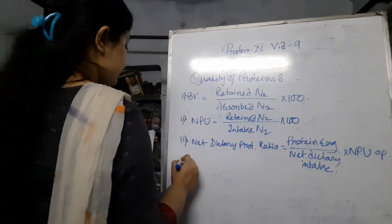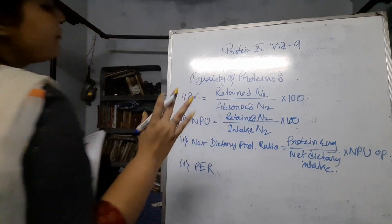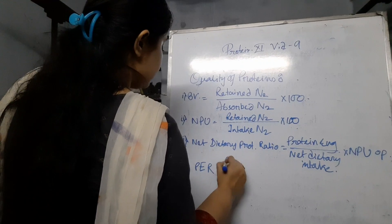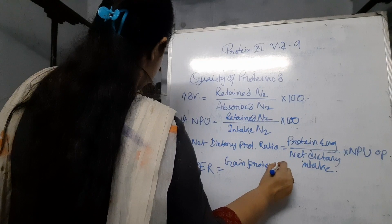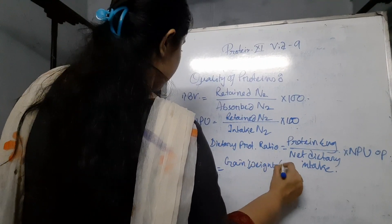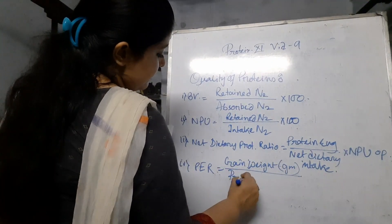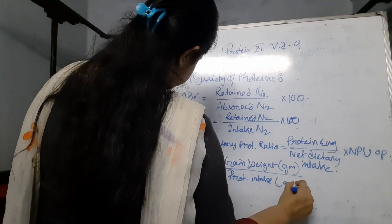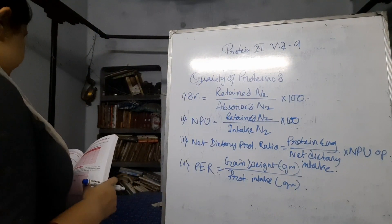The next term is PER, or protein efficiency ratio. What is it? That is gain in weight (in grams) by protein intake (in grams). It is also bi-gram. So this ratio is called the protein efficiency ratio.